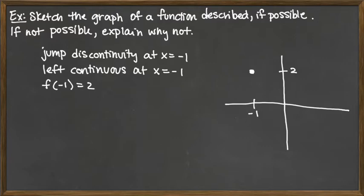So here I'm specifying that it needs to be left continuous at that x value. So I need it to be left continuous at x equals negative 1, so I'm really going to attach my point from the left-hand side there. It doesn't matter so much where it goes, I just know that I need to attach it there from the left-hand side.